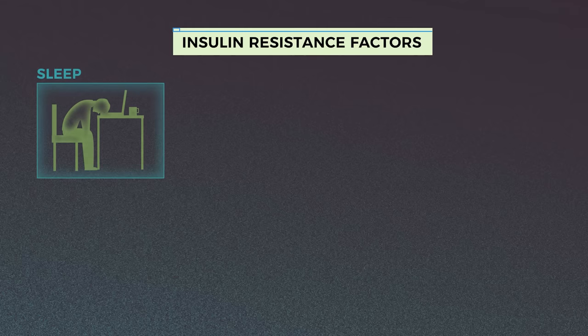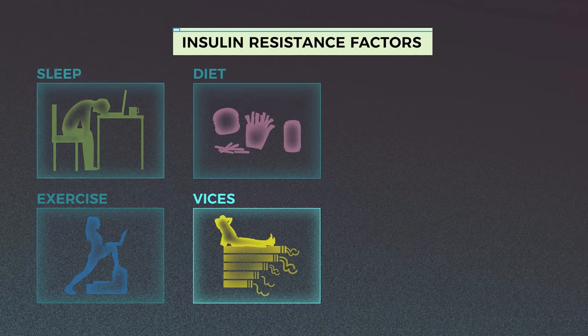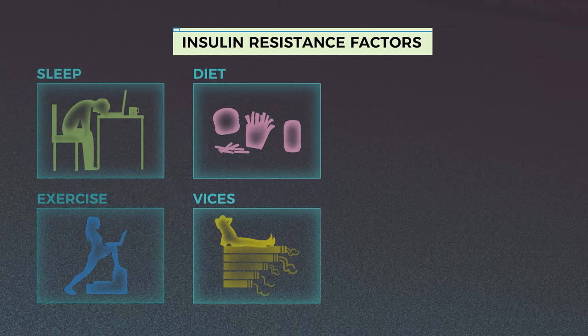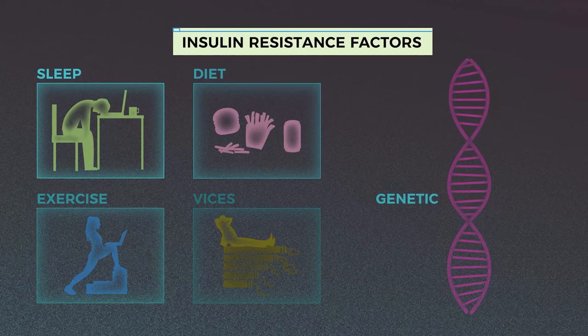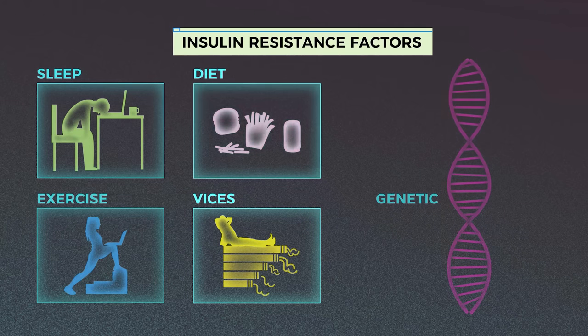Insulin resistance is multifactorial, which means there are many possible causes, but most often they are from lifestyle factors like sleep, diet, exercise, vices, and more. But interestingly enough, it actually has a higher genetic predisposition than type 1 diabetes, which means you are more likely to have type 2 diabetes if somebody in your family has it as well.